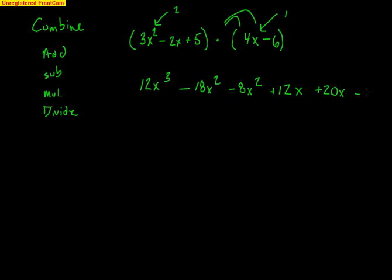Notice that we had a trinomial — 3 terms — times a binomial — 2 terms — and 3 times 2 is 6, so after the multiplication there should be a total of 6 terms. Let's see if some of them can be combined. It does look like the negative 18 and the negative 8 can be combined.